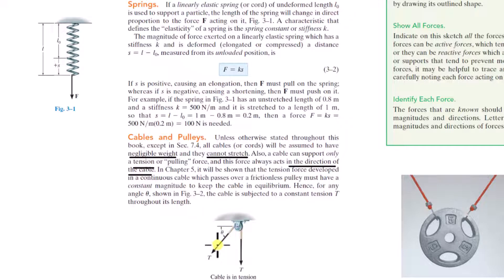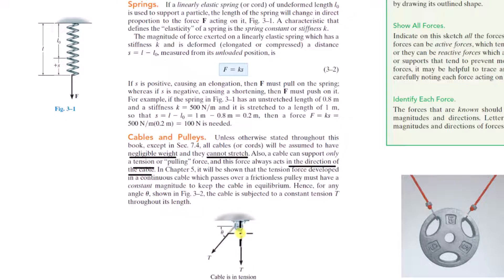We'll talk more about pulleys in detail in chapter five, but you can usually assume a pulley is frictionless, so the tension in the cable is constant on either side of the pulley. If you had an extremely corroded pulley that was seized, you might get a slack cable on one side and a taut cable on the other, so tensions wouldn't be equal. But usually the loads are so high in the cable relative to any friction force in the pulley that you can assume the pulley is frictionless.